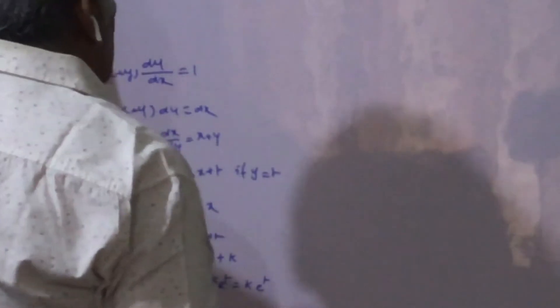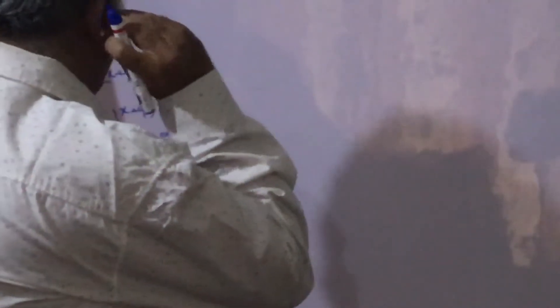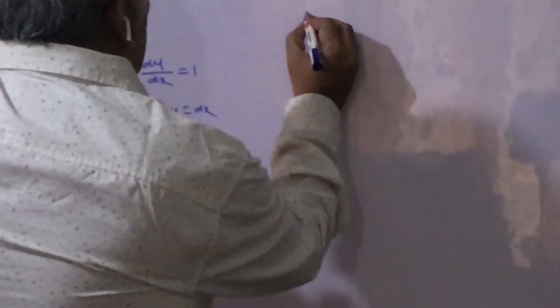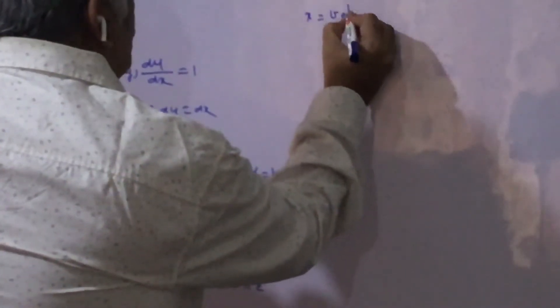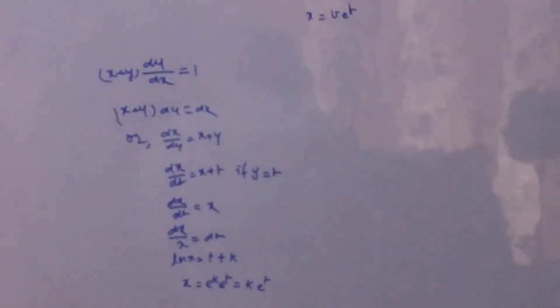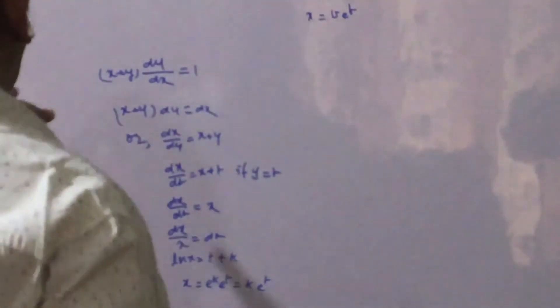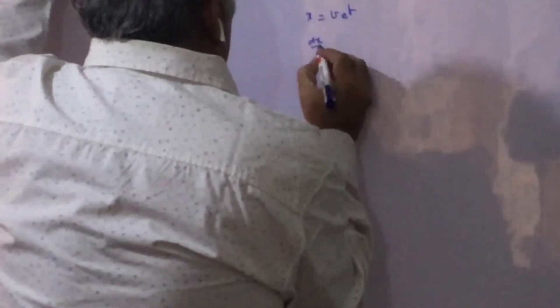For finding the particular integral, we replace the constant in the homogeneous solution by some function of t, that is v. So let us say x = v·e^t is the solution of the equation. Now we will differentiate it and substitute into the given equation so that we can evaluate v.